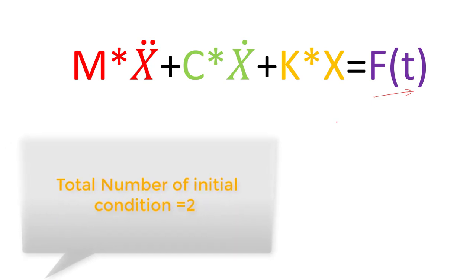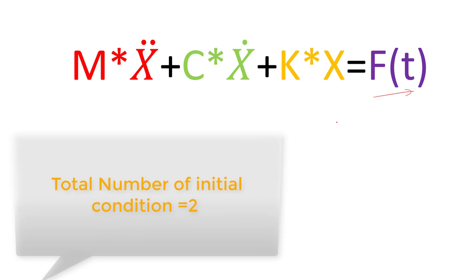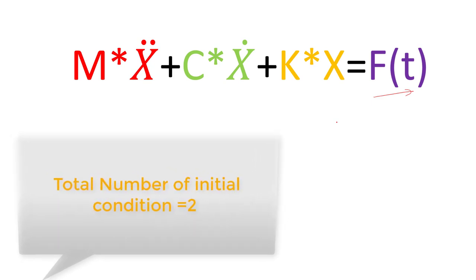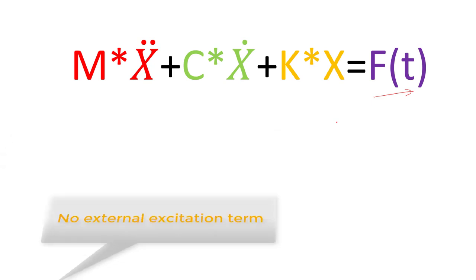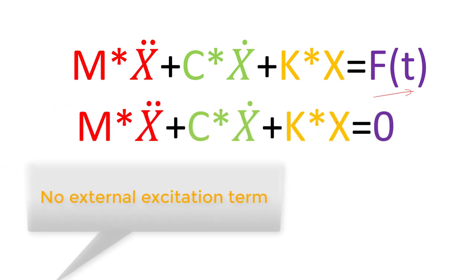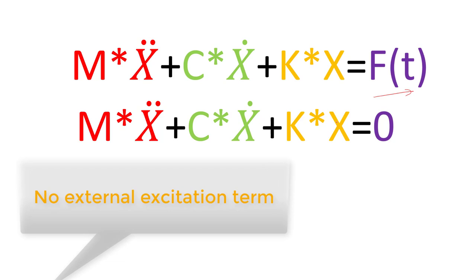Now let's derive the governing equation for free vibration. To do that, we drop the term on the right-hand side — the external excitation force term. The equation then becomes simply mx'' + cx' + kx = 0.